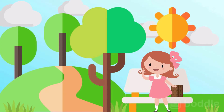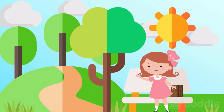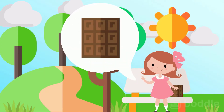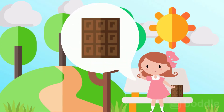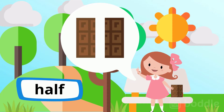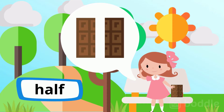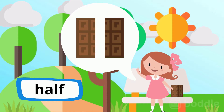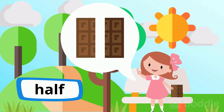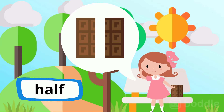This is Sophia. She has a candy bar that she wants to divide in half. If she splits it in half, how many pieces will she have? Correct — she will have two pieces.